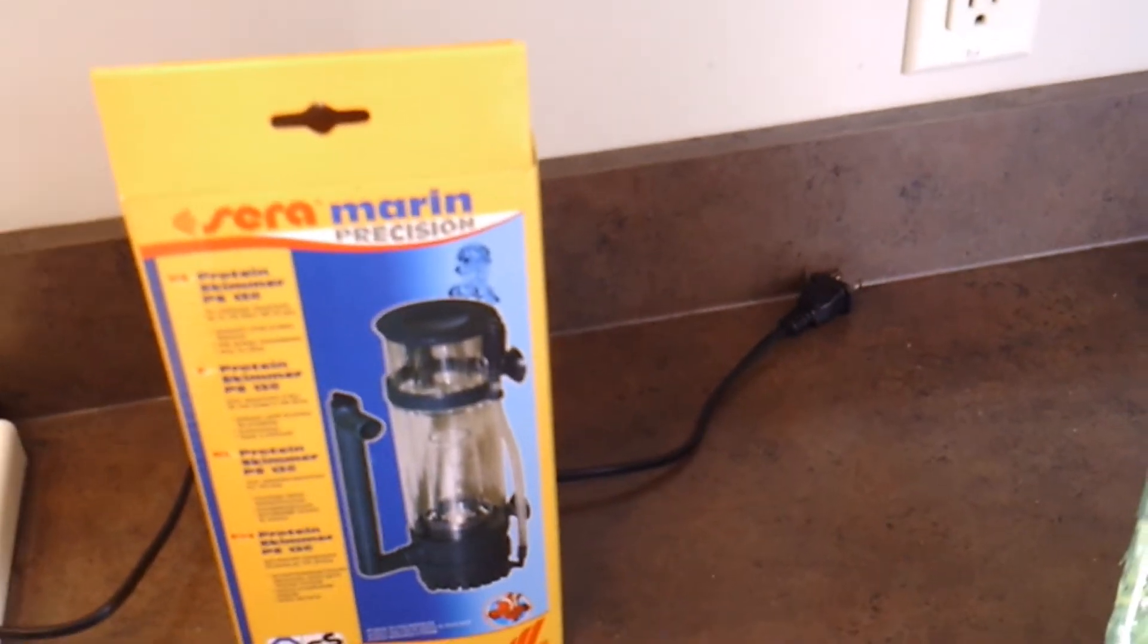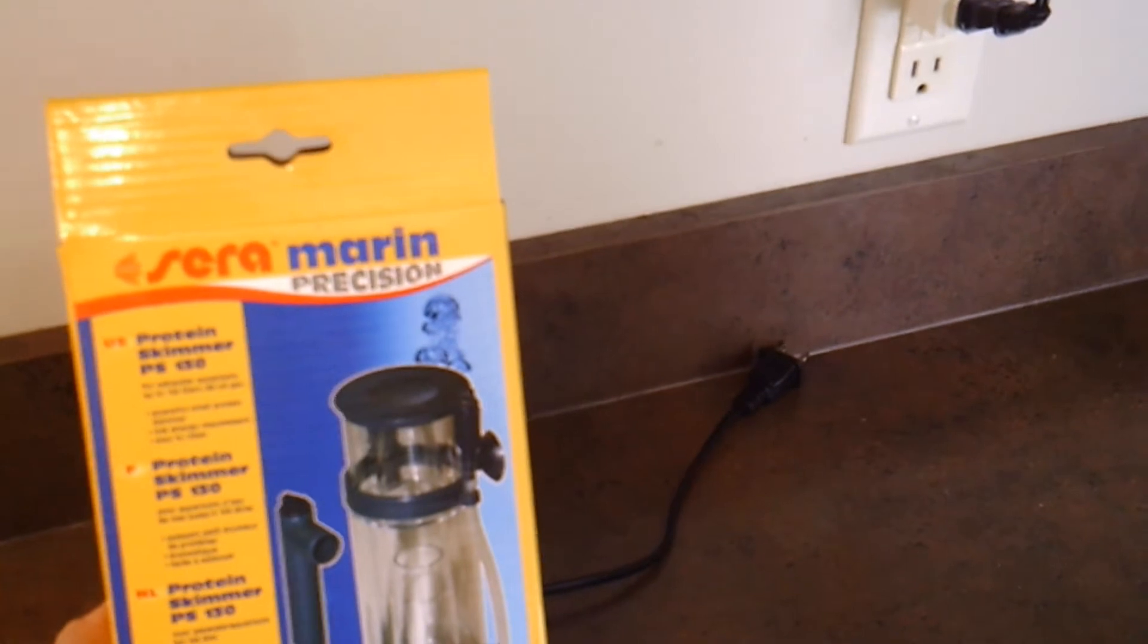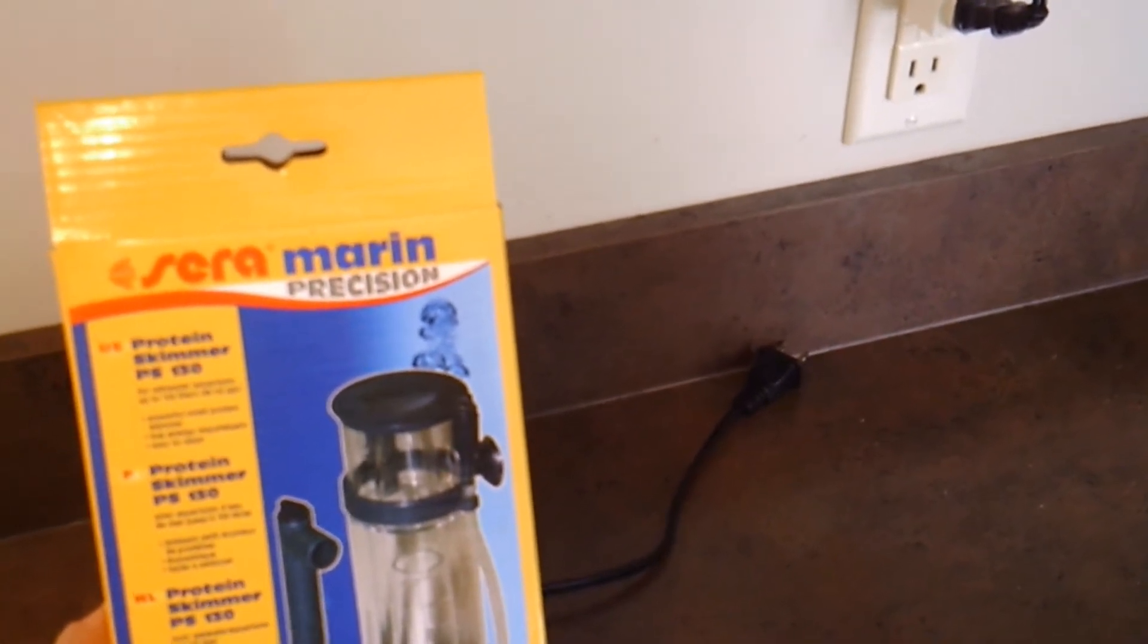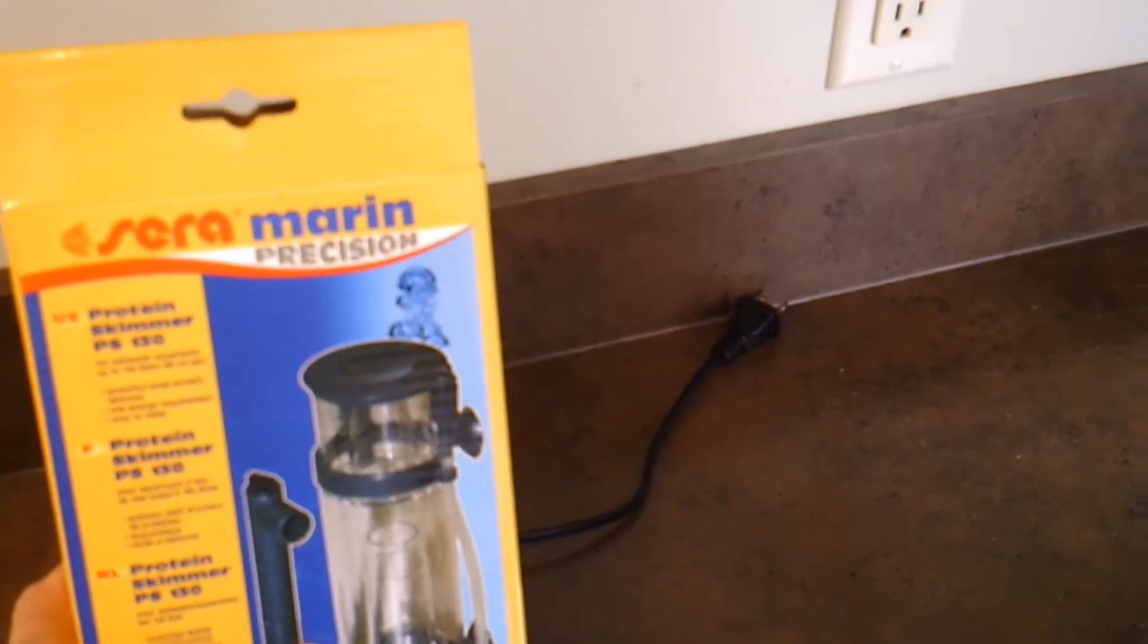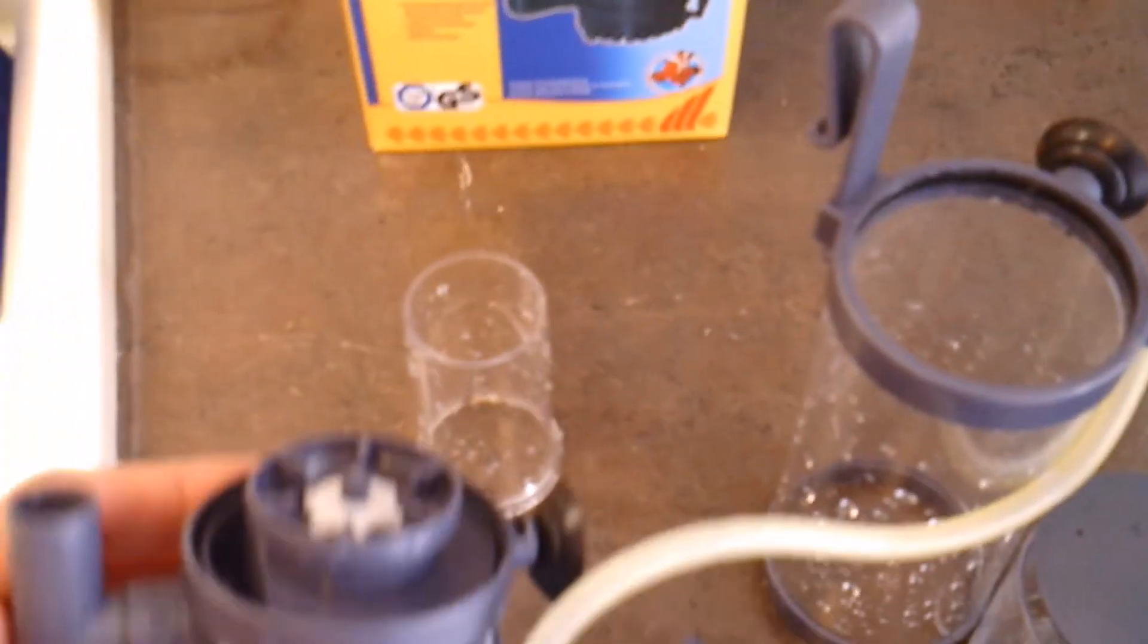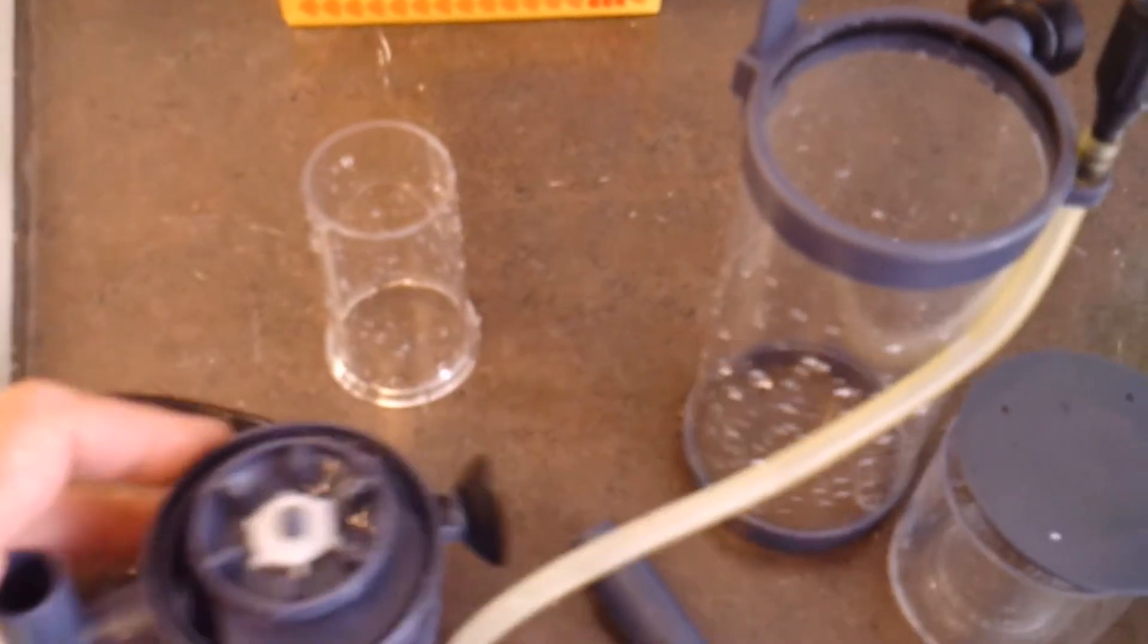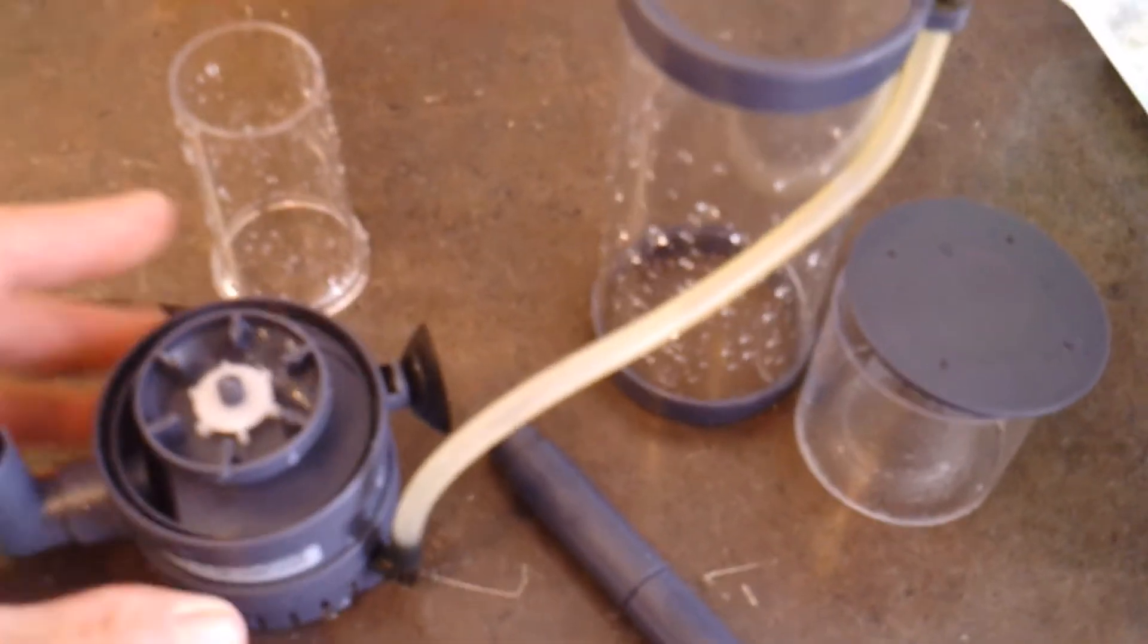So I picked up this Sera Marin, which is Marine in German I assume, the PS130 protein skimmer. Here are the components. You can see that it is really, really small. Here's my hand - I'm a normal size person, so you can tell in reference that it's really, really small.